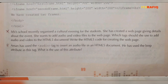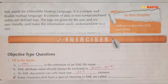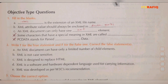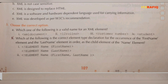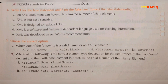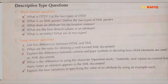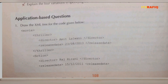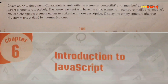Now we move to Chapter 5: XML. From fill in the blanks, D and E are not required. From MCQ, B, D, and E are not required. From short answers, all answers are not required. From long answers, only A and B are required. For application based, draw tree is required; number 2 and 3 are not required.